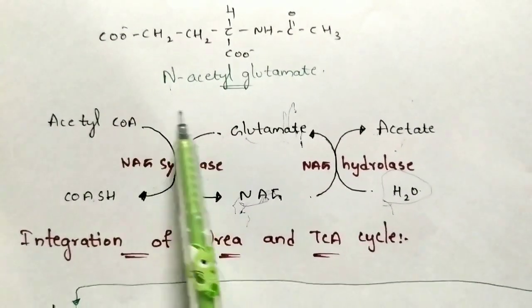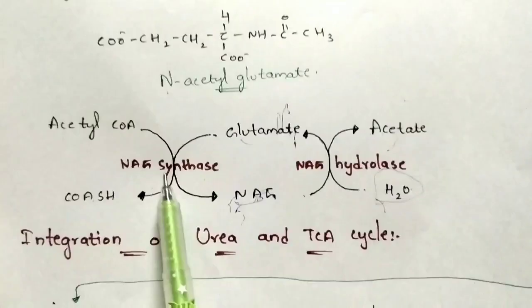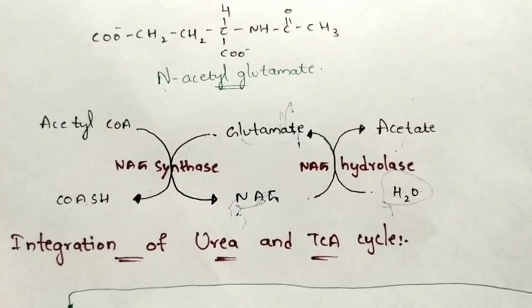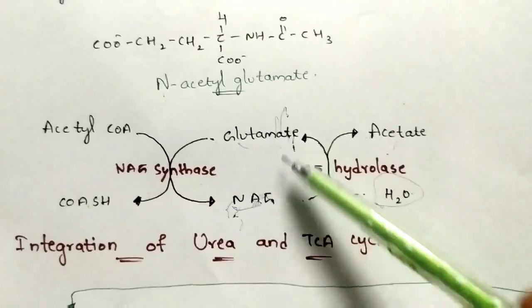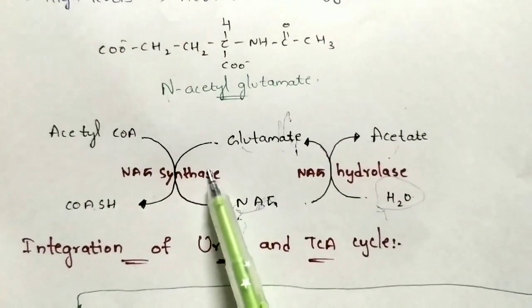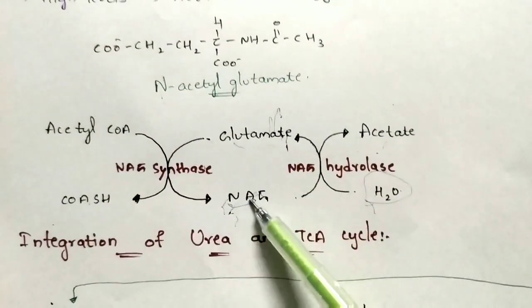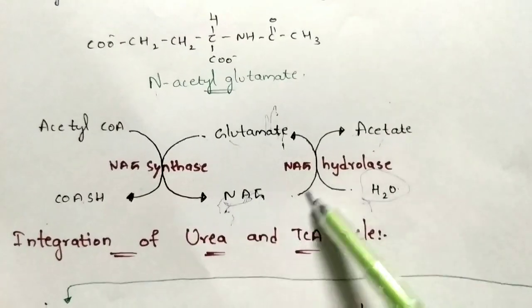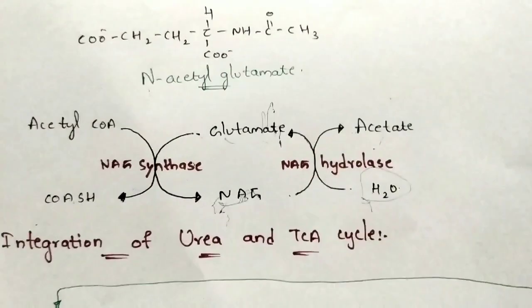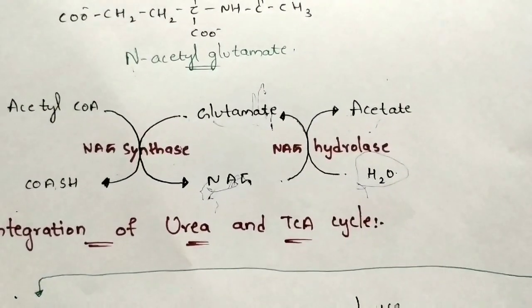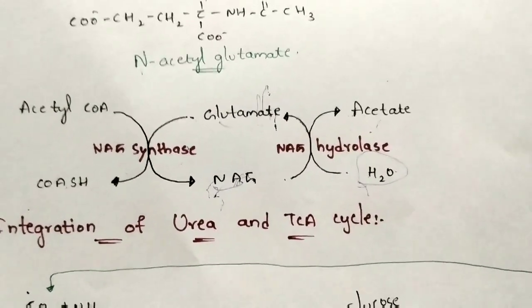In terms of NAG metabolism: acetyl-CoA is converted to CoA-SH by utilizing the enzyme NAG synthase (N-acetyl glutamate synthase), and glutamate is simultaneously converted to N-acetyl glutamate by the same enzyme, with acetyl-CoA being consumed and CoA-SH liberated. N-acetyl glutamate can be converted back to glutamate by NAG hydrolase, utilizing a water molecule with acetate liberated as a byproduct.